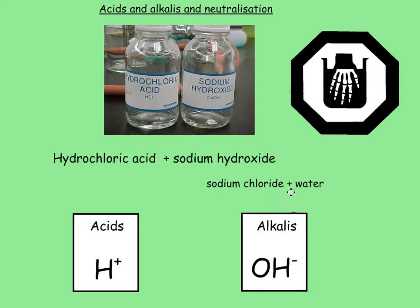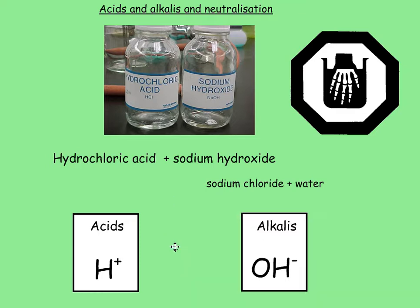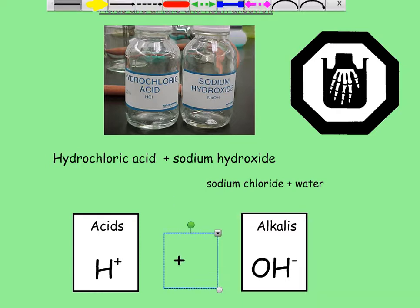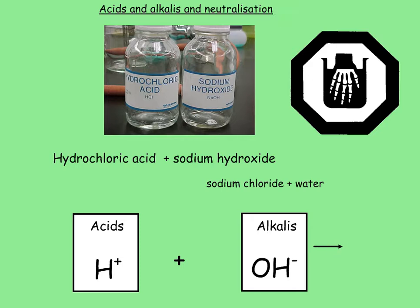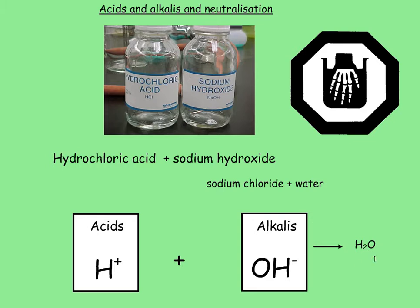Now, when we talk about a neutral salt, we need to have a look at something called the pH scale. The ionic equation for this is: H⁺ plus OH⁻ goes to H₂O. So that's where the water comes from — two H's and an O, H₂O. So acids have got H⁺ ions, alkalis have got OH⁻ ions, and together they make H₂O. Fabulous.